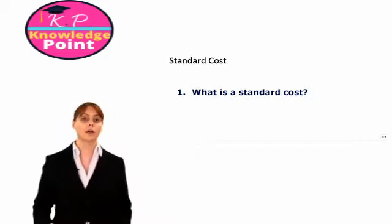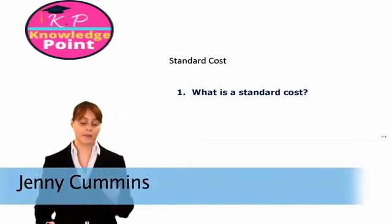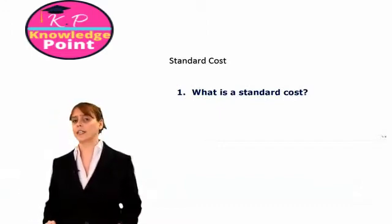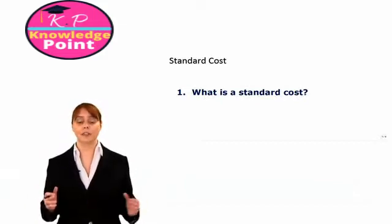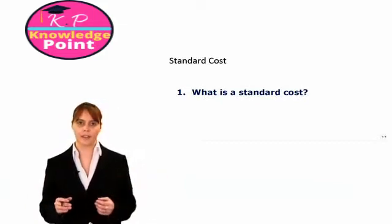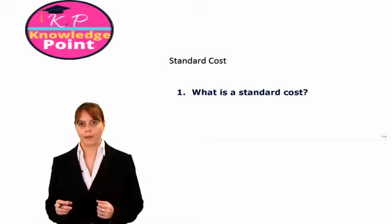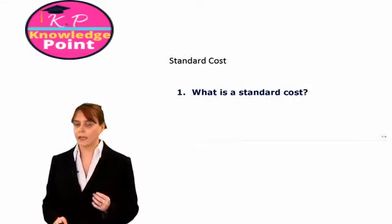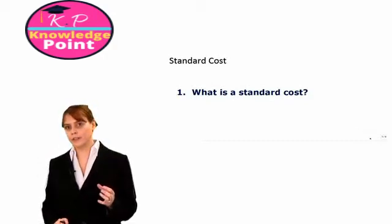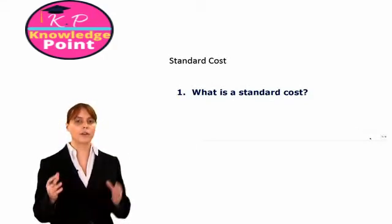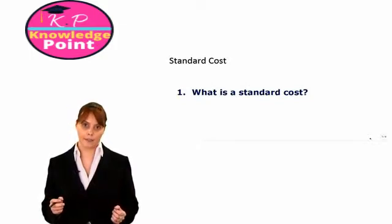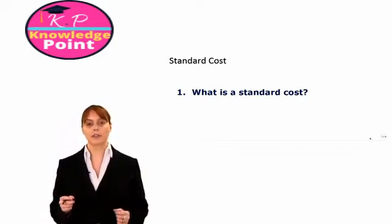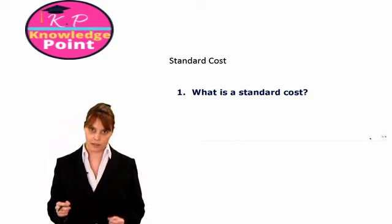In the last chapter we saw that a company will prepare a flexible budget and compare this to their actual results to see how well or how badly they've done over the year compared to their expected or original budget. In this chapter, we are going to look in more detail at comparing our budgeted results to our actual results for each of the different cost types. But before we get into that, first we are going to look at something called our standard cost card.